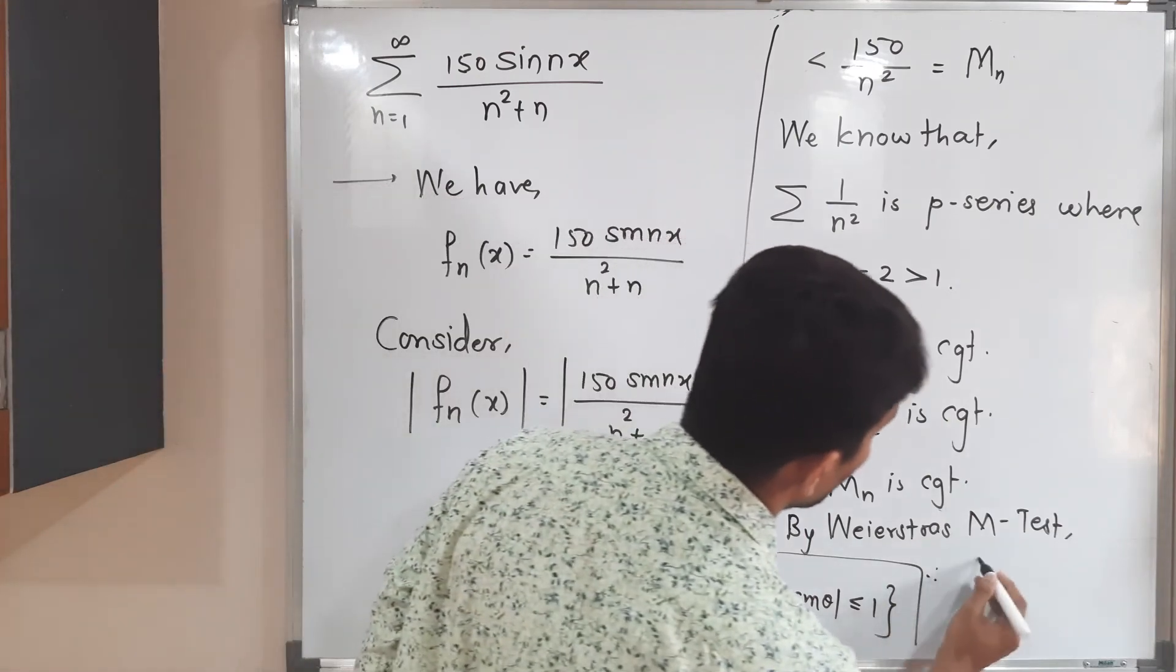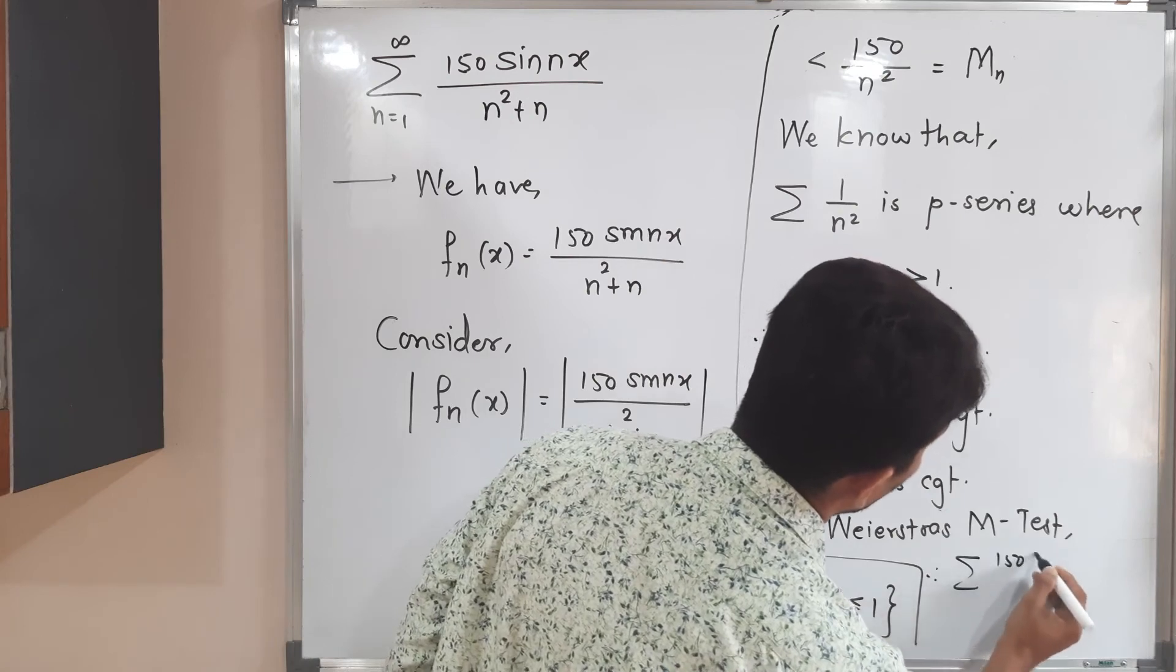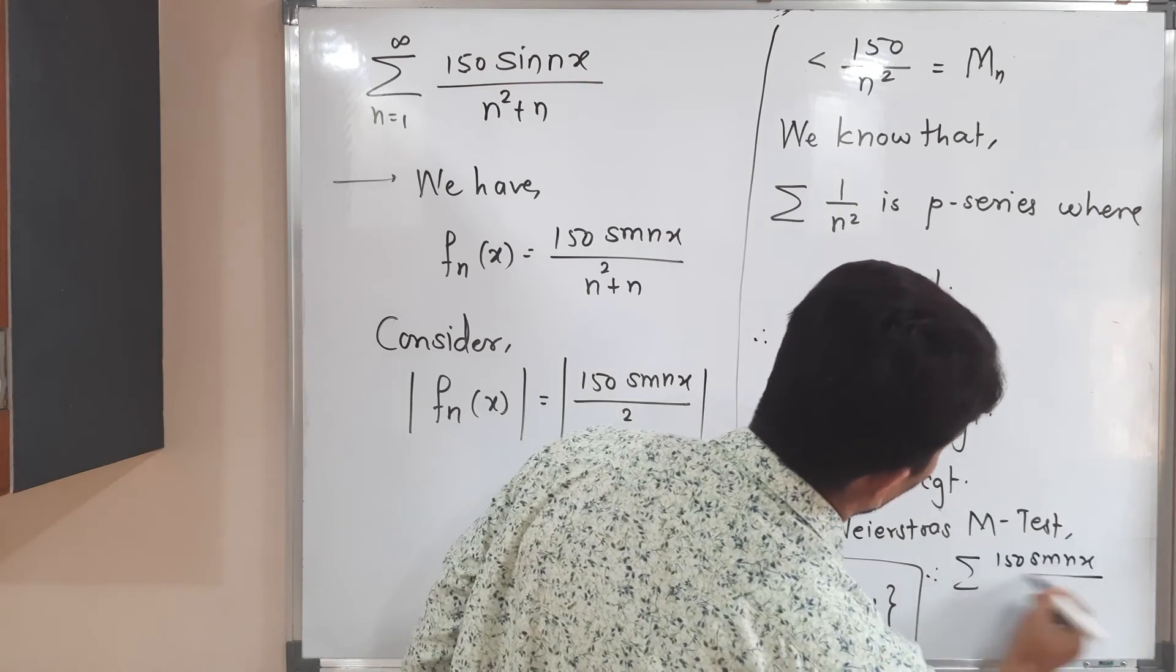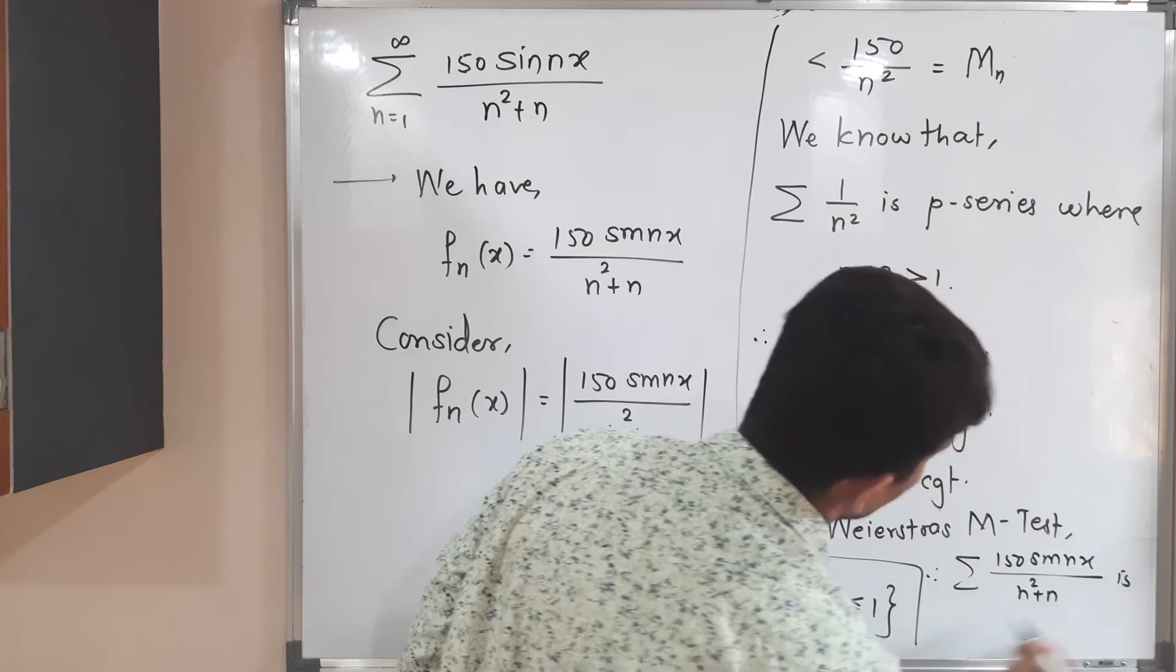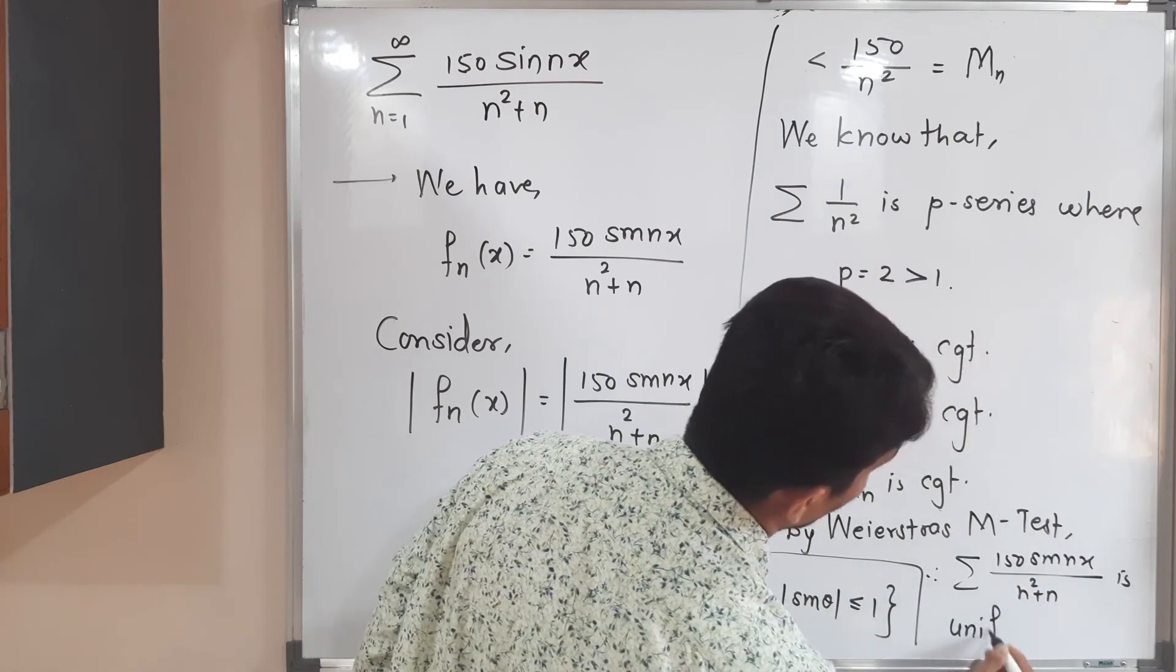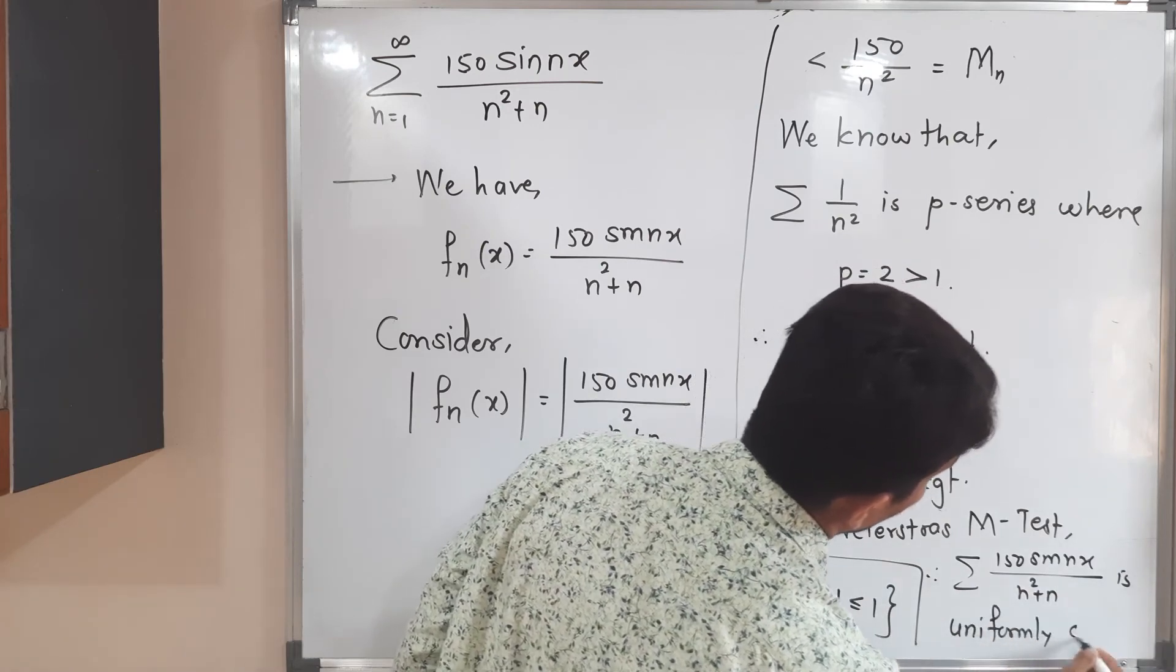Weierstrass M-test says if summation M_n is convergent, then the given series of functions is uniformly convergent. So therefore summation 150 sin nx divided by n square plus n is uniformly convergent.